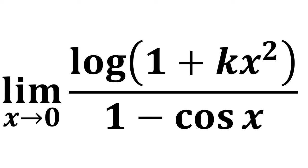In this video, we learn to find the limit of natural log of 1 plus k times square of x upon 1 minus cosine of x as x approaches 0.